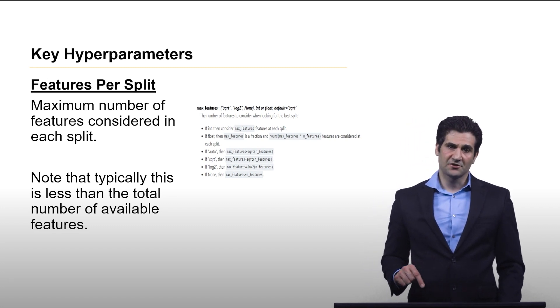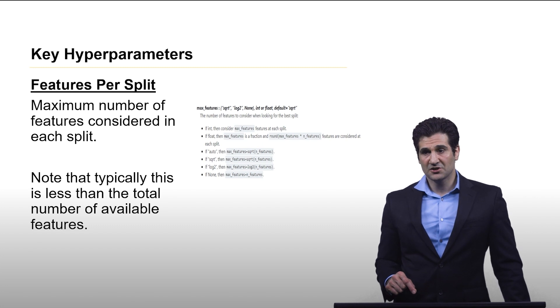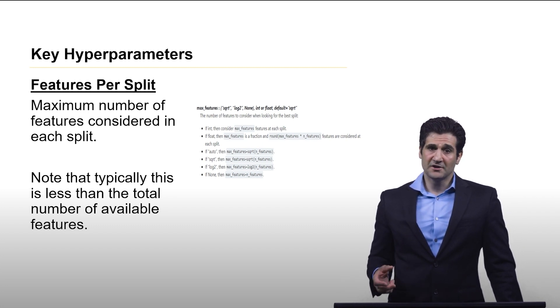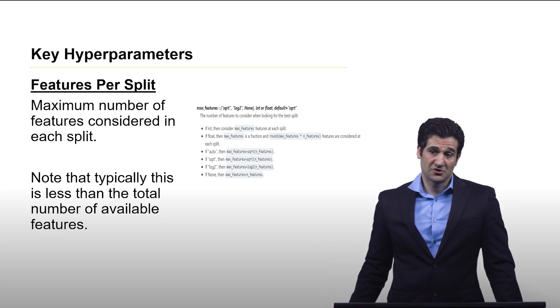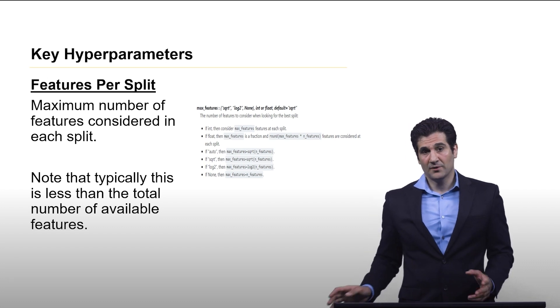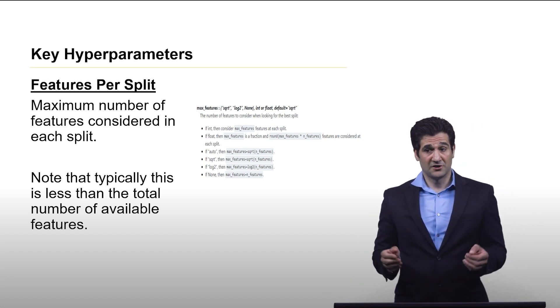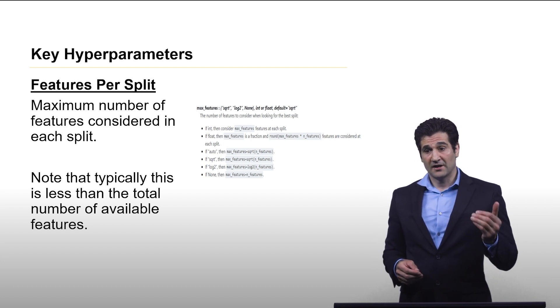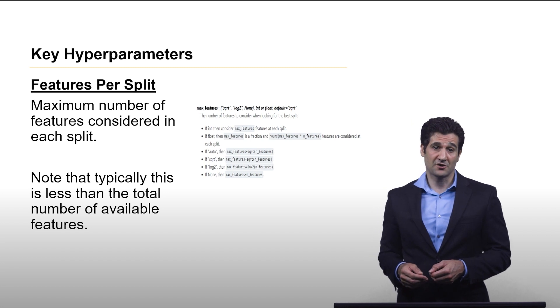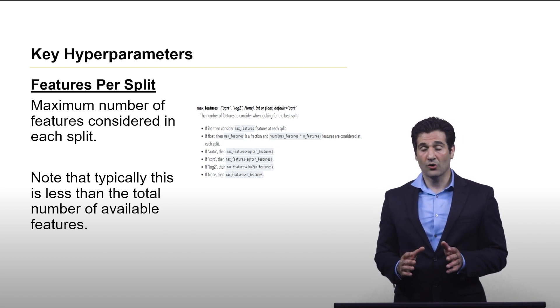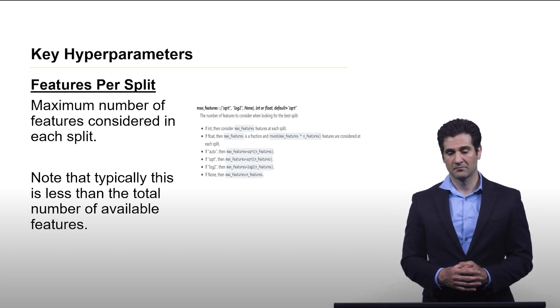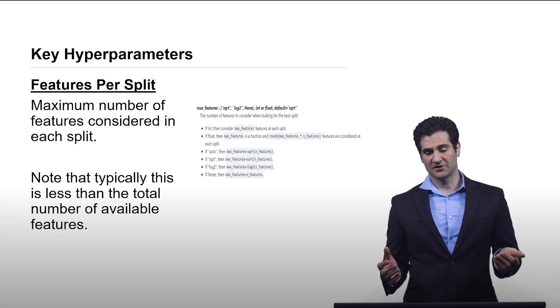The next is the features per split. In addition to using different samples of data, we also limit the number of features that are considered when we make a split at each node in the decision tree. Earlier when we discussed a regular decision tree, we would take a look at every threshold value for every possible feature. Now here, we're only going to look at a subset of the features when making this split. This also adds a level of diversity to the trees.